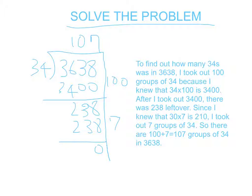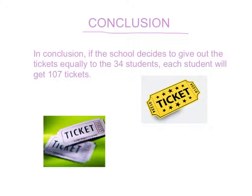So I know that there are 100 plus 7, a total of 107 groups of 34 in 3,638. In conclusion, if the school decides to give out the tickets equally to the 34 students, each student will get 107 tickets.